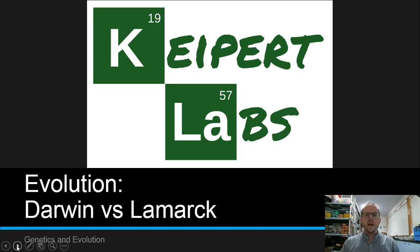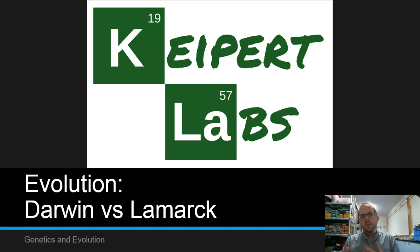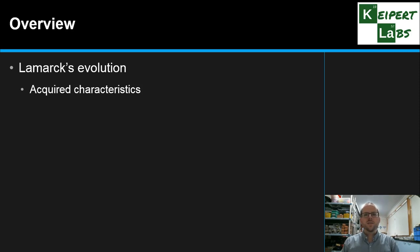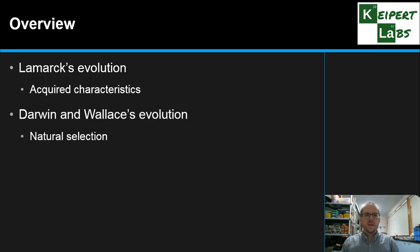Each of these scientists had some different ideas about how evolution, or this descent with modification, this change over time, might occur. We're going to go through and unpack their theories. Firstly we're going to discuss Lamarck's idea of evolution, which we call acquired characteristics, and then Darwin, who was helped by a naturalist named Alfred Wallace, and the evolution by natural selection.